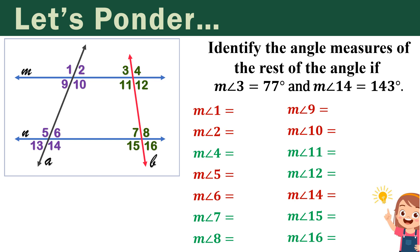Now let's proceed with task number 2. What if we have two transversal lines? Lines M and N are parallel lines, and we have two transversal lines — line A and line B. Based on our given data, the measure of angle 3 is 77 degrees, and the measure of angle 14 is 143 degrees. Even though we have two transversal lines, one thing I'd like to share is that you focus on one given first.